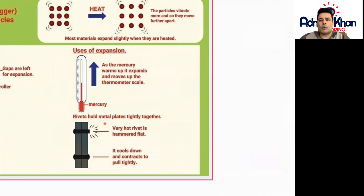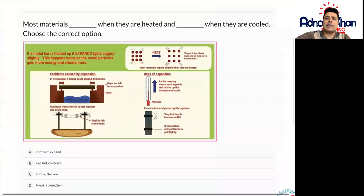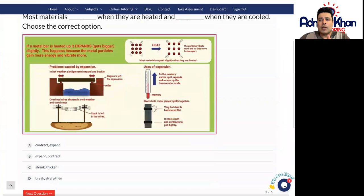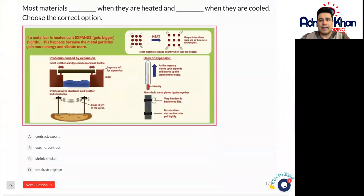Rivets hold metal plates tightly together. These are the rivets here. A very hot rivet is hammered flat. It cools down and contracts to pull tightly. These are some of the things that engineers have to take into account especially with metals. Remember we're talking about just metals here more than anything else.